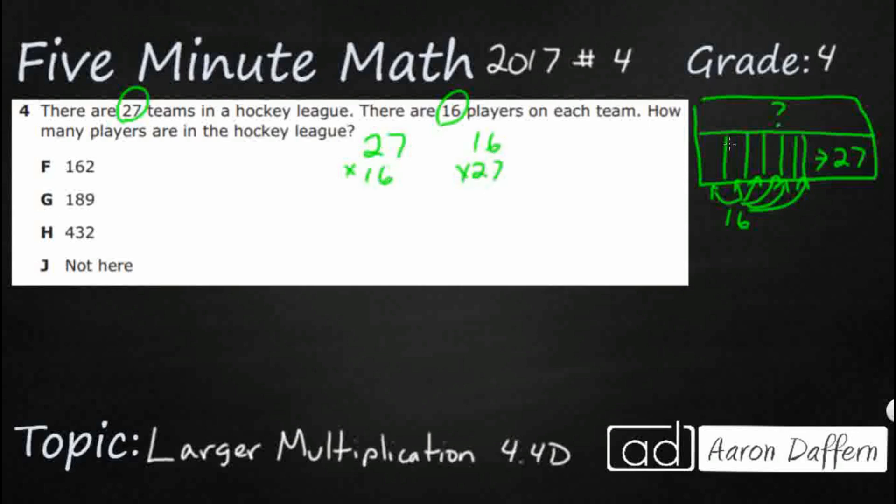Remember the commutative property lets us do either one. So let me see if I can break this down by place value. This 27 is really a 20 plus 7. And I'm going to do it like this because I want you to be able to see how we multiply. I'm going to use partial products first.